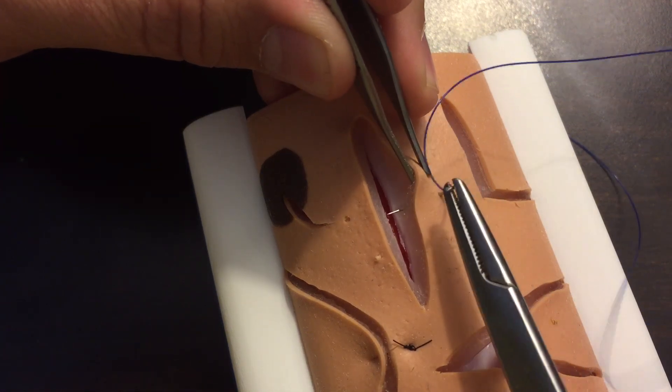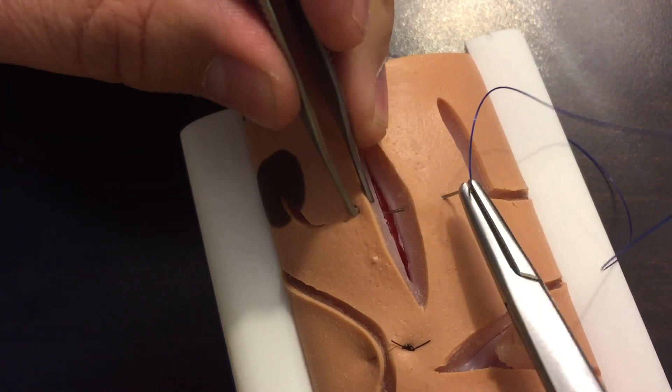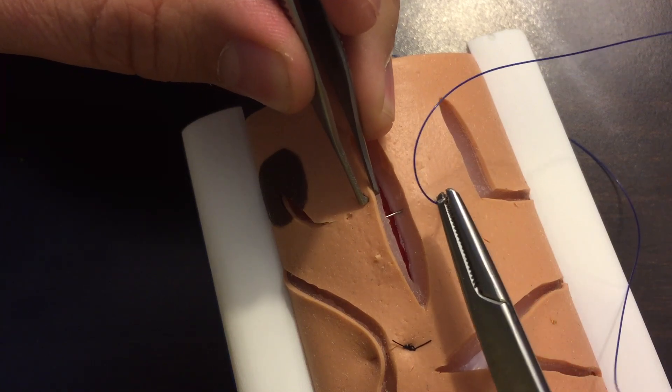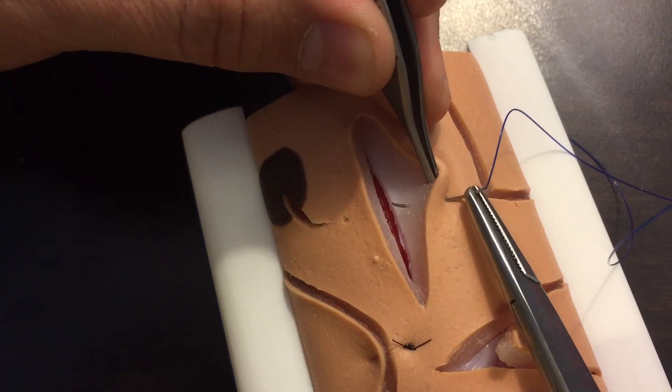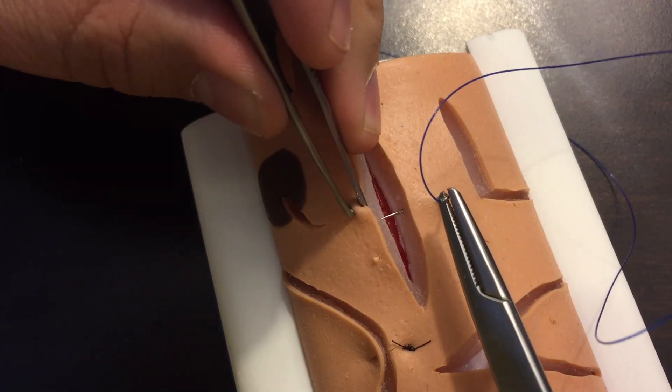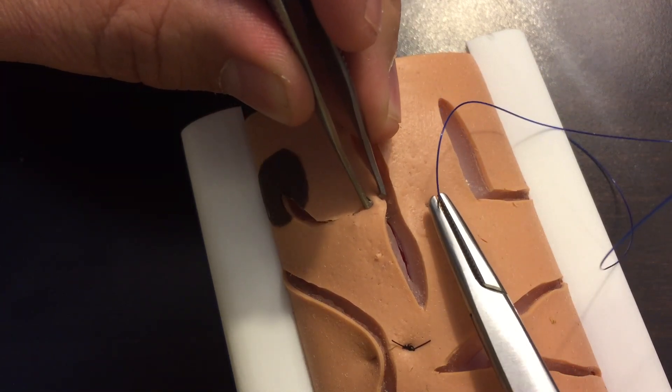You're going to come out, rotate it down, just like this. Then we're going to enter the opposite subcutaneous tissue at the same depth that we exited here. That's important, otherwise your skin is going to bunch up.